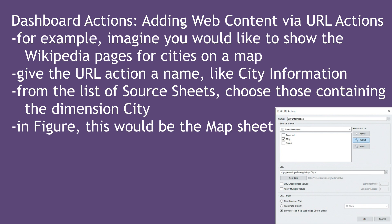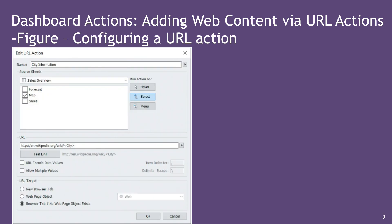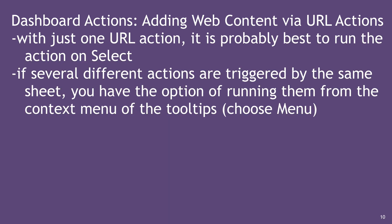For example, imagine you'd like to show the Wikipedia pages for cities on a map. Give the URL action a name like 'City Information', as shown at the top where it says Name. From the list of source sheets, choose those containing the dimension City, such as the Map sheet — you can see the checkbox beside Maps selected in the upper left of the sources section.